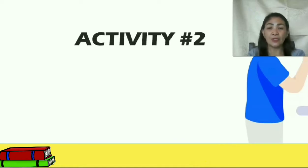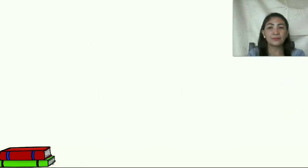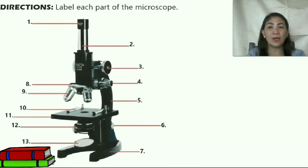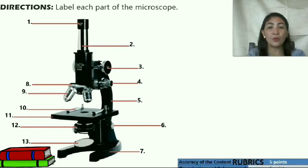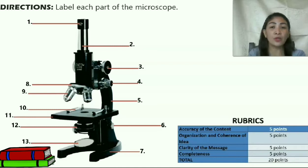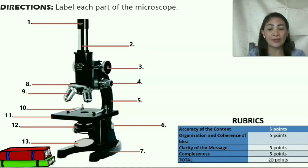Let's solve activity number two. Direction: Label the parts of the microscope. Rubrics are given below — accuracy of the content: 5 points; organization and coherence of ideas: 5 points; clarity of message: 5 points; completeness: 5 points — a total of 20 points. I will give you five minutes to answer the activity. Timer starts now.